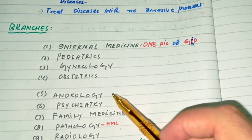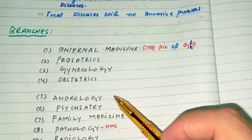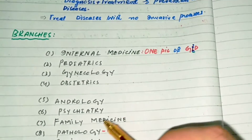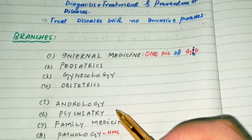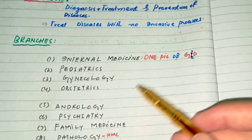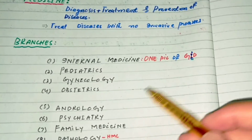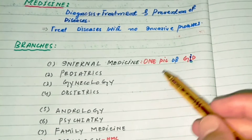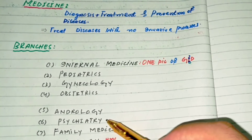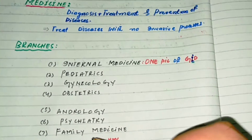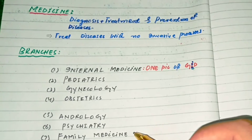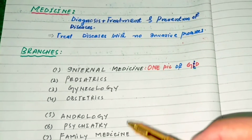The fifth branch is andrology, in which we study diseases of only men, mainly related to the male sex organs. The sixth branch is psychiatry, in which we study mental disorders like depression, mania, bipolar disorder, schizophrenia, and others. In psychiatry, we study the diagnosis, treatment, and prevention of psychiatric illness.